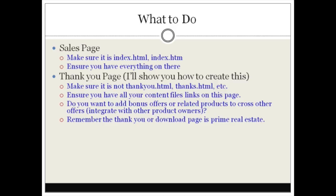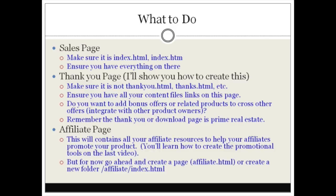Then we have the affiliate page. The affiliate page is basically your page with all your promotional tools where affiliates can come, learn more about your product, and find tools they can use to promote it — such as banner ads, solo ads, Google AdWords ads, keywords, blogging pages, and so forth. I recommend you create a file called affiliates.html or create a new folder called affiliate and put the page in there named index.html.